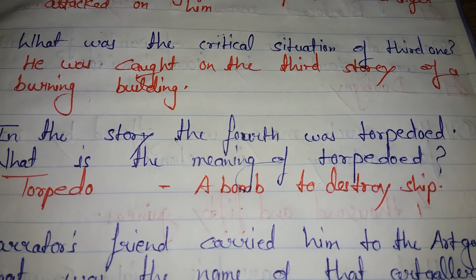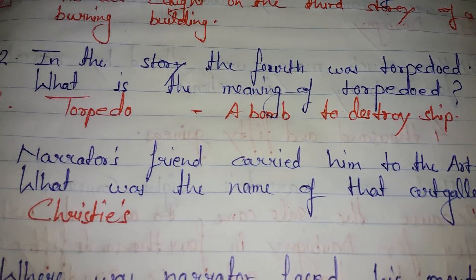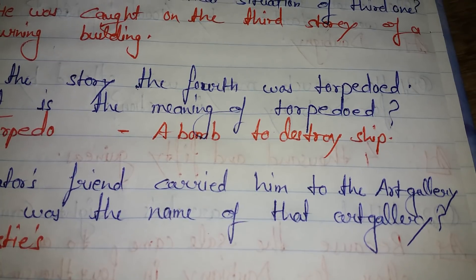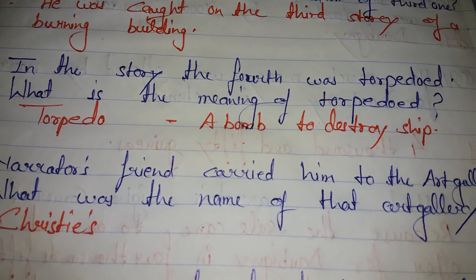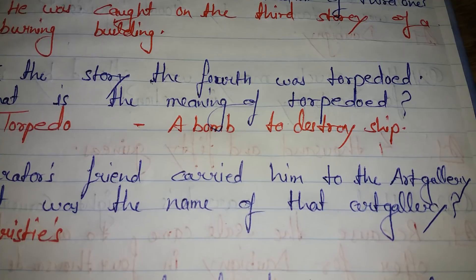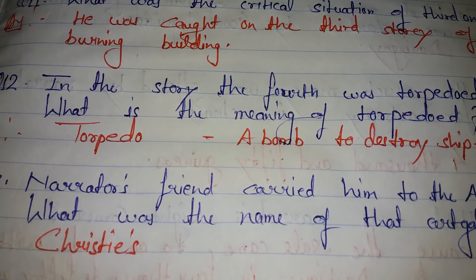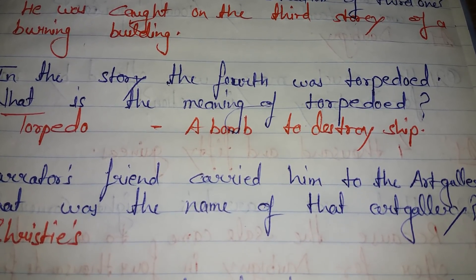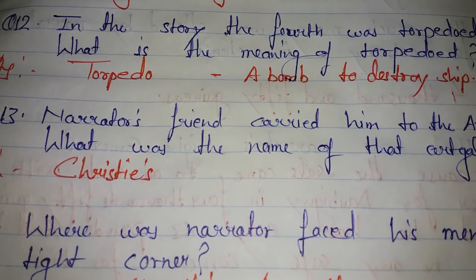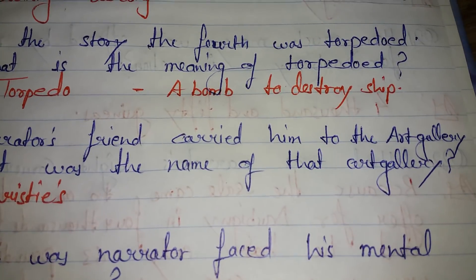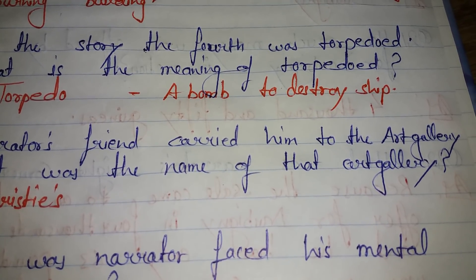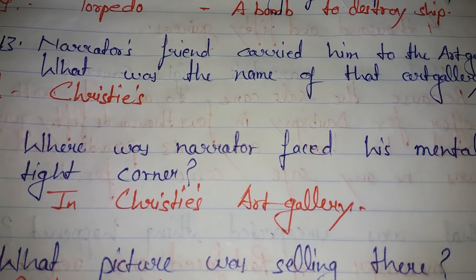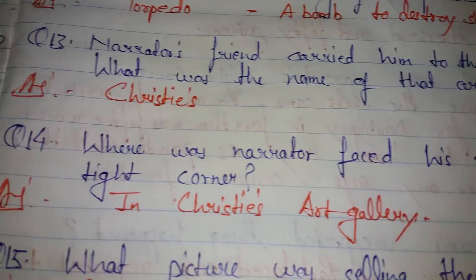These are all physical tight corners. Next question: in the essay the fourth person was torpedoed. What is the meaning of torpedoed? Torpedo means a bomb to destroy a ship. So we must remember that torpedo means a bomb used to destroy a ship.